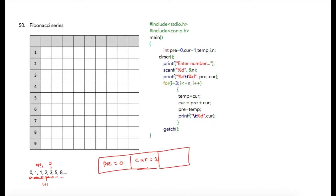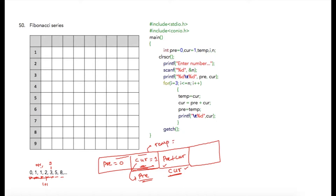When we calculate the third variable, it becomes the new current, and the previous value of current becomes previous. We need to assign the value of current to previous, and calculate new current as previous plus current. However, before updating current, its old value needs to be saved in a temporary location, because current will be changed — so we store it using temp equal to current.